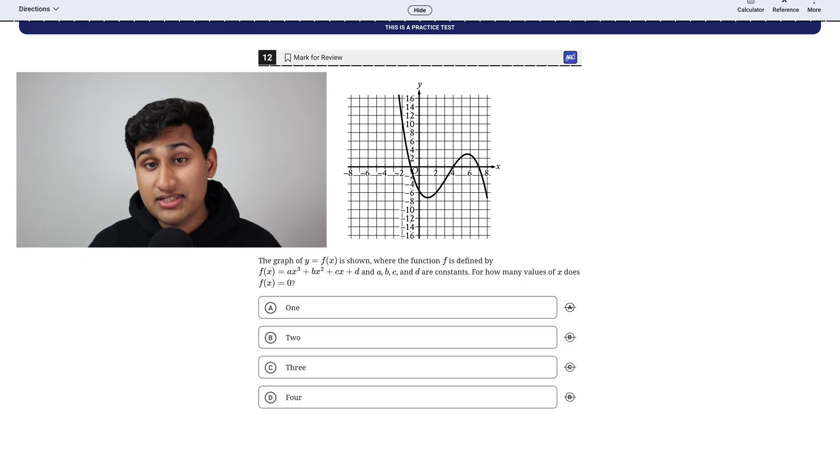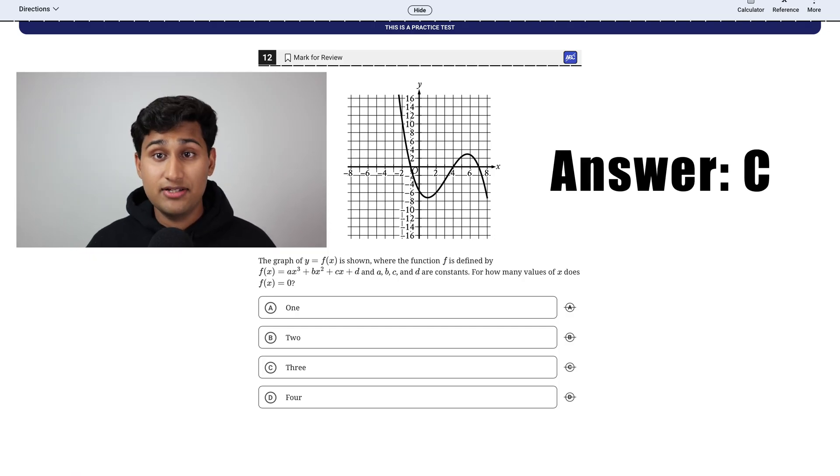And if you look at this graph, it crosses the X axis three times, one at negative one, one at four, and then one at seven. So that's three times. So your answer is C. So don't overthink these questions. They're very simple. Nine times out of 10.